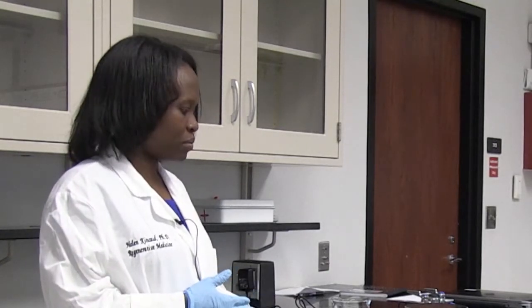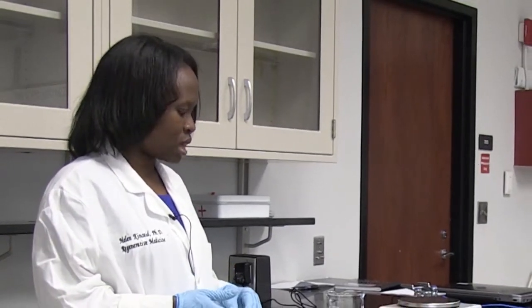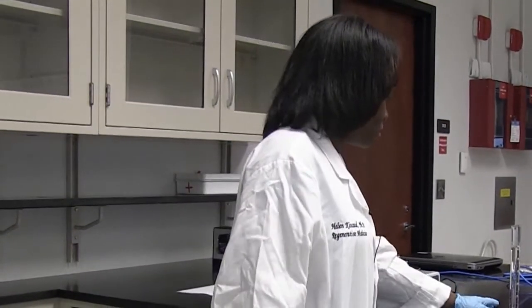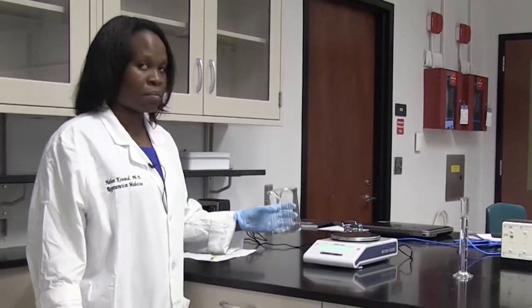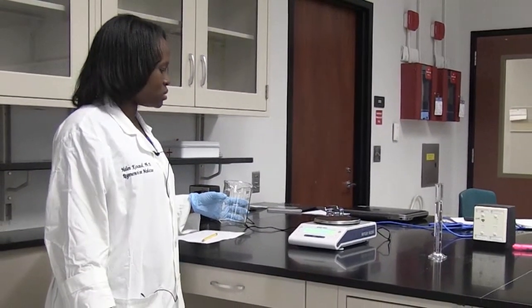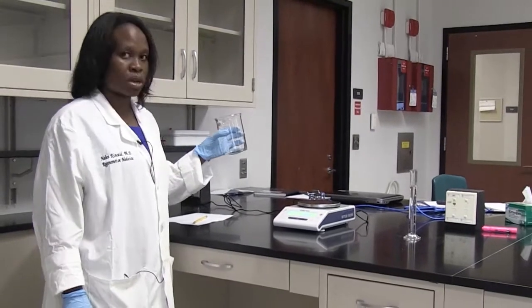In order for us to determine the density of water, we have to determine its weight and its volume. So in order to do this, I'm going to actually weigh 50 milliliters of water by placing it into a beaker. So in order to do this, I first have to determine the weight of my beaker.